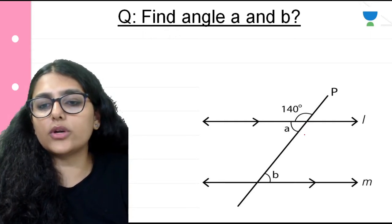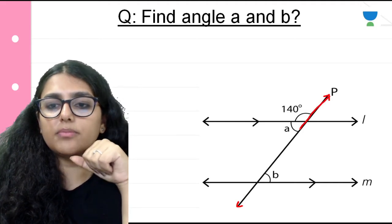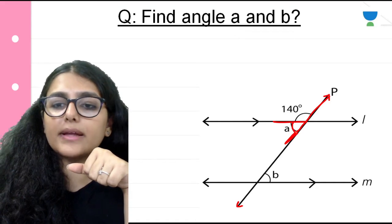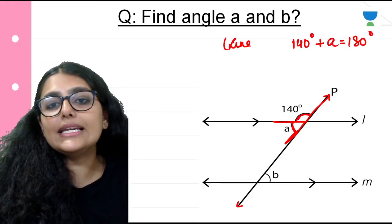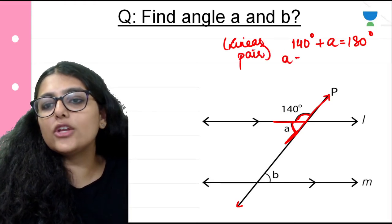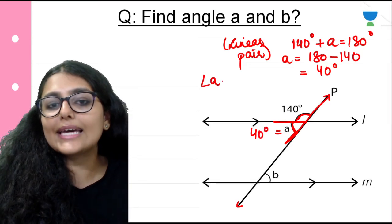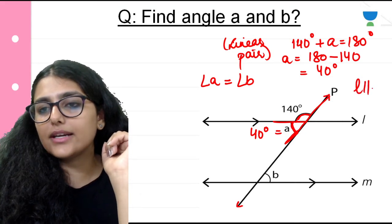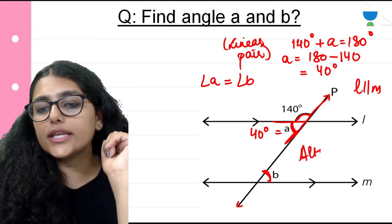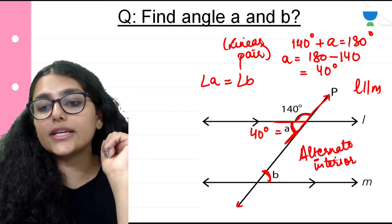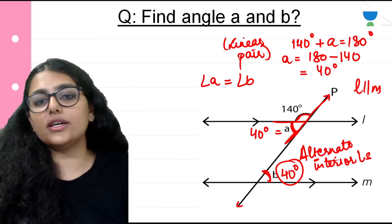Find angle A and B. P is the transversal and this is a straight line with a common arm. So 140 degrees plus A equals 180 degrees because they form a linear pair. A equals 180 minus 140, which equals 40 degrees. Now if L is parallel to M and this is the transversal, angle A equals angle B because these are alternate interior angles. So angle B also equals 40 degrees. Therefore A and B are both equal to 40 degrees.